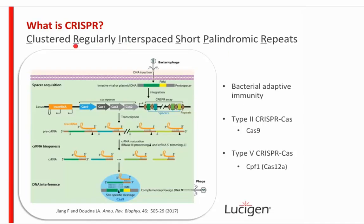CRISPR stands for Clustered Regularly Interspaced Short Palindromic Repeats, which relates directly to this array of sequences. The different colored rectangles are derived from DNA from an invading bacteriophage — when a virus infects a bacteria, fragments of its DNA are inserted into the CRISPR array. Interspaced between those spacers is a repeat sequence shown with brown diamonds. This CRISPR array is processed into CRISPR RNA which, along with the tracer RNA, makes up the guide that binds to Cas9. When Cas9 binds its guide, it is armed and ready to perform site-specific cleavage of incoming foreign DNA.